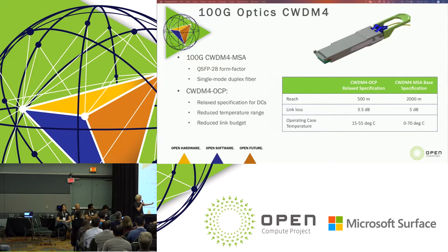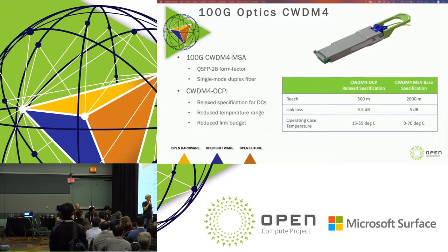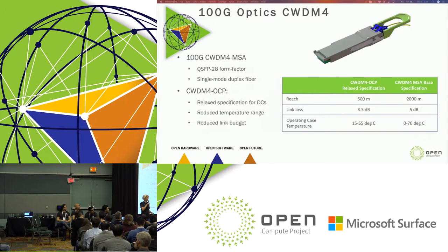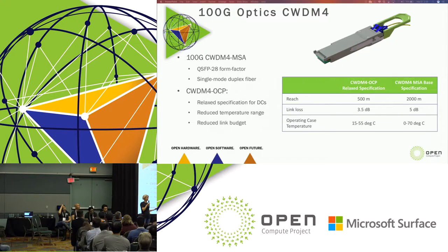We tailored the specification for our own particular environment inside a data center, which is a little different from what other end users use. For example, the telecommunications industry has stringent requirements on reach, temperature, and lifetime. So we tailored those specifications for a data center environment. The reach — instead of two kilometers from the MSA — inside our data center the longest length we could possibly need was 500 meters. We've defined the link loss appropriate for that distance and the number of connectors. The operating case temperature is also reduced: instead of zero to 70°C, we control it to 15 to 55°C — about half the temperature range.